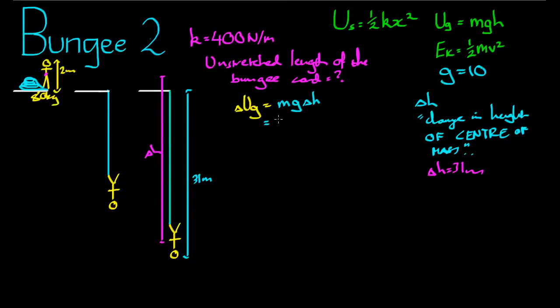So the center of mass of the person has fallen 31 meters. Delta UG is equal to 80 times 10 times negative 31, since they've fallen 31 meters. That comes to a total of negative 24,800 joules. That must be that amount of energy there. The energy that is stored in the spring. Since at this point here, there's no kinetic energy, there's been a complete exchange of gravitational potential to spring potential. So that's the amount of energy stored in the spring.